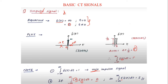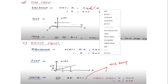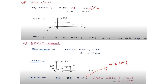Next, we move on to the step signal, which is one of the most important signals as it will be used in further signal representations. The step signal has amplitude A for t ≥ 0, and 0 for t < 0. If amplitude A equals 1, the signal is called the unit step signal, with standard notation U(t).